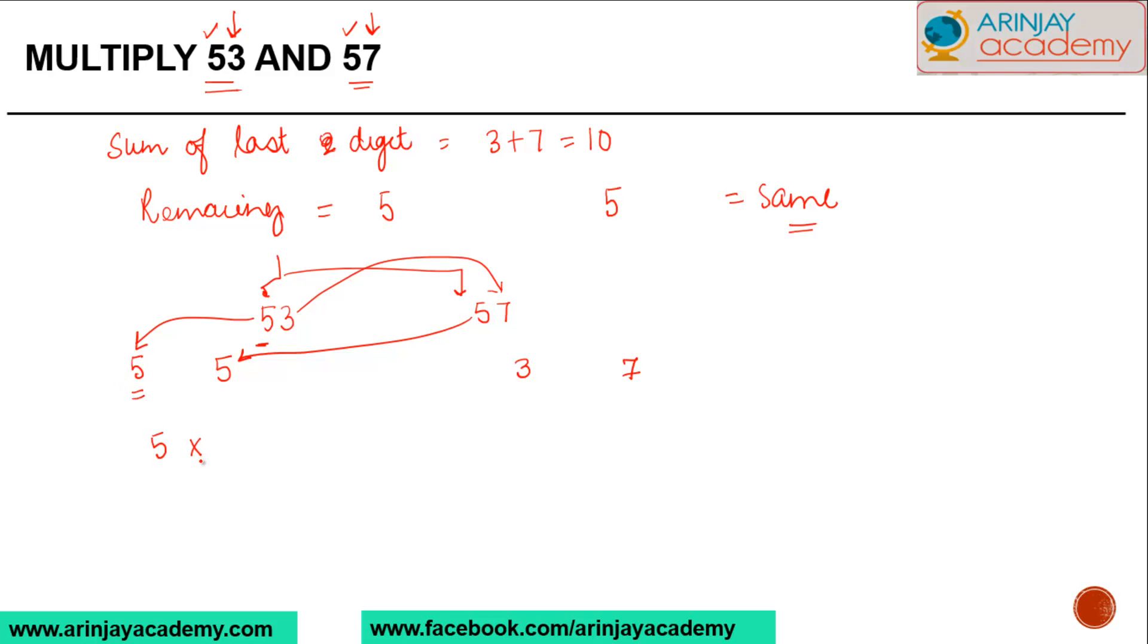The rule is very simple. As part 1, what we do is we multiply the first digit, which is 5, with the next digit. Just like in the previous case for square of numbers ending with 5, here also I'm going to multiply 5 by 5 plus 1, or in other words I will multiply 5 by 6 and I get 30. As part 2, I'm simply going to multiply these two numbers, so 3 times 7 gives me 21. My answer will be nothing but this number on the left and this number on the right: 3021.